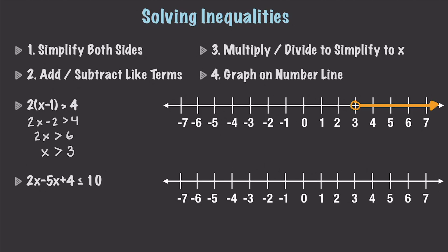In this next example, we have 2x minus 5x plus 4 is less than or equal to 10. We simplify the x-like terms: negative 3x plus 4 is less than or equal to 10. Subtracting 4 from both sides gives negative 3x is less than or equal to 6. The key thing with inequalities is that anytime you multiply or divide by a negative number, you have to reverse the inequality. Dividing by negative 3 flips the sign, giving us x is greater than or equal to negative 2. We find negative 2 on the number line, draw a filled in circle, and draw the line in the greater than direction.